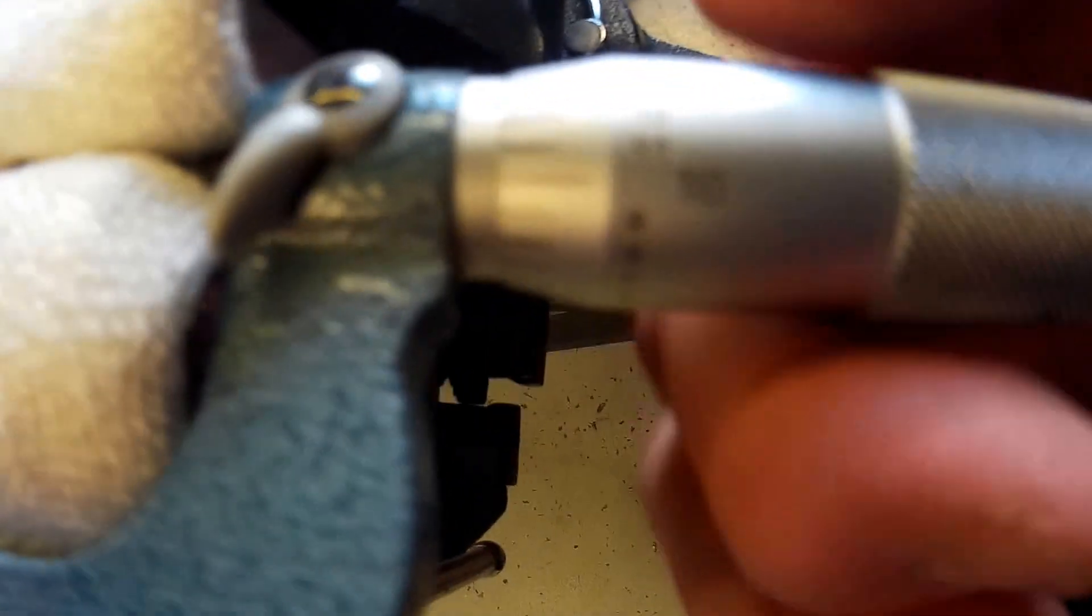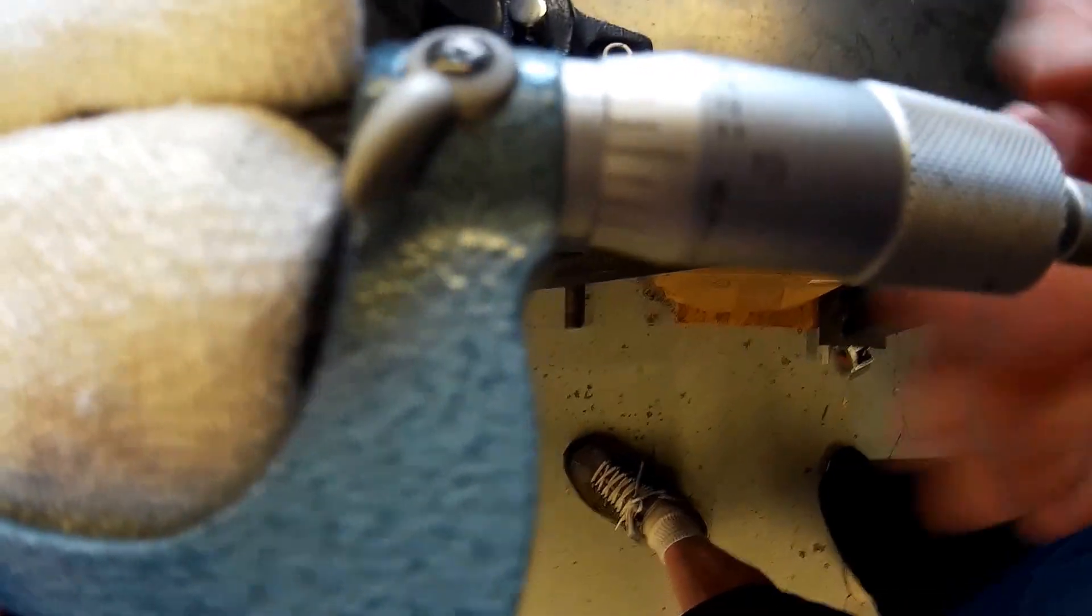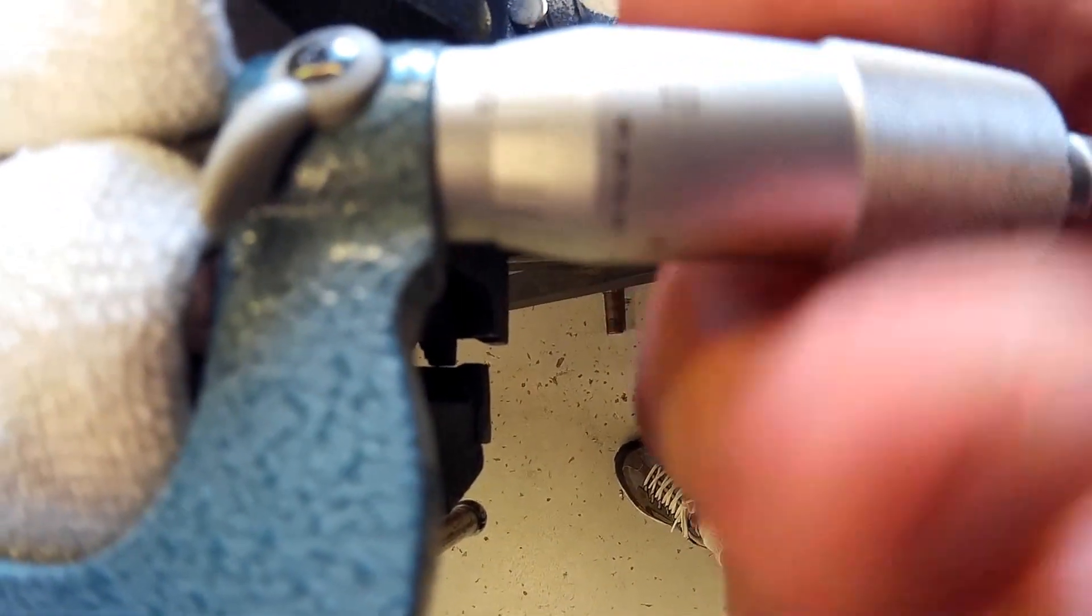Now you're going to grab the main part here and just spin and pull it towards the ratchet till it pops free. There it goes, pops free.